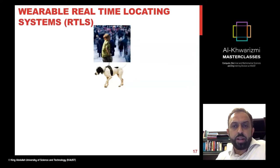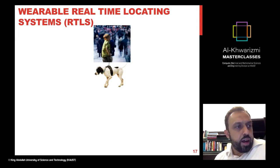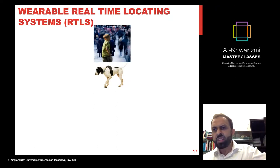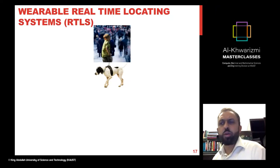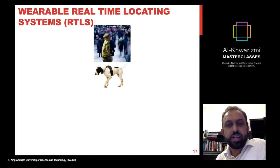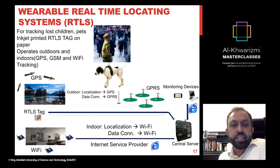A system-level example: a friend's two-year-old son got lost in a mall in Jeddah for 30 minutes. I said with all this technology you should be able to find your child. That started a project: we designed a tracking system for missing children and toddlers that works both outdoors using GPS and indoors using Wi-Fi, since GPS doesn't work indoors.